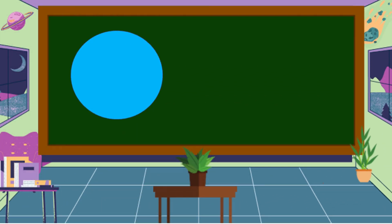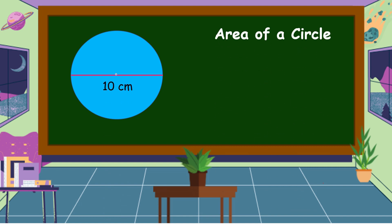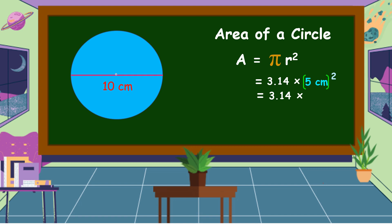What plane figure is this? This is a circle. The diameter of this circle is 10 centimeters. To find the area, we use the formula: area equals pi times radius squared. The estimated value of pi is 3.14. Our radius is 5 centimeters — since we are given the diameter, we divide it by 2. So, 3.14 times 5 centimeters times 5 centimeters equals 3.14 times 25 centimeters squared, which equals 78.5 centimeters squared. This is the area of this circle.